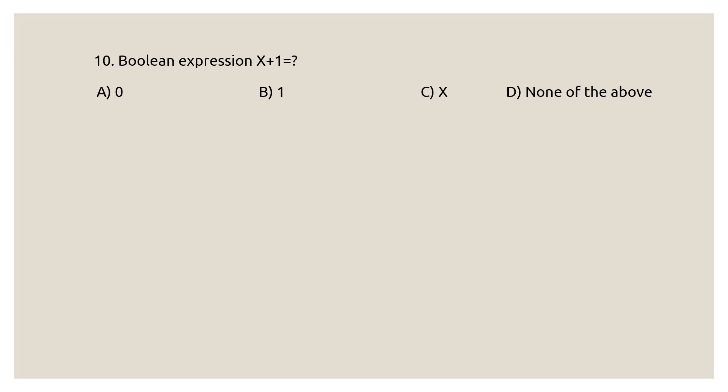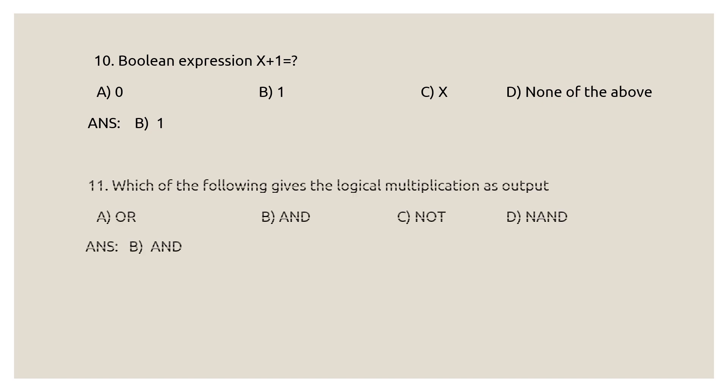Next question: the Boolean expression X + 1 equals what? Options: A) 0, B) 1, C) X, D) None of the above. The correct answer is option B, one, because according to the properties of zeros and ones, X + 1 = 1 regardless of whether X is 0 or 1. Final question: which of the following gives logical multiplication as output? The correct answer is option B — the AND gate is also called logical multiplication.